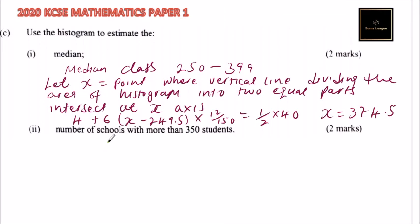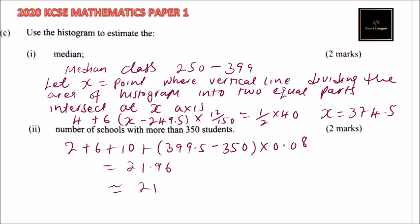But roman number two, you say it is 2 plus 6 plus 10 plus 399.5 minus 350, and you multiply by 0.08, and this is equal to 21.96, which we can say approximately 21 schools. So that is how you get that question. If you get to this stage, then you have scored 10 marks.